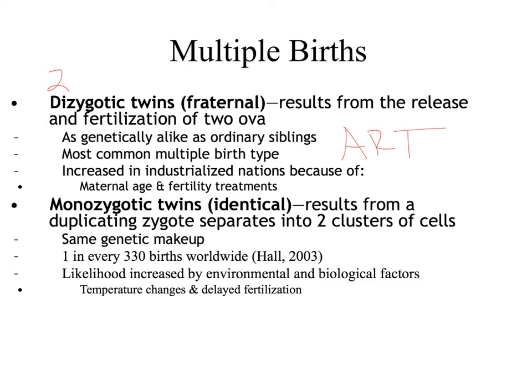We also have monozygotic twins, which basically means 'mono' coming from one — a single zygote fertilized by a sperm that separates into two clusters of cells, thereby giving birth to an identical twin. This is one in every 330 births worldwide, meaning the individuals have a very similar or identical genetic makeup. As a result, there have been many studies focusing on whether these individuals' personalities are a byproduct of their genes or of nurture. You will hear a lot of twin studies throughout the course.